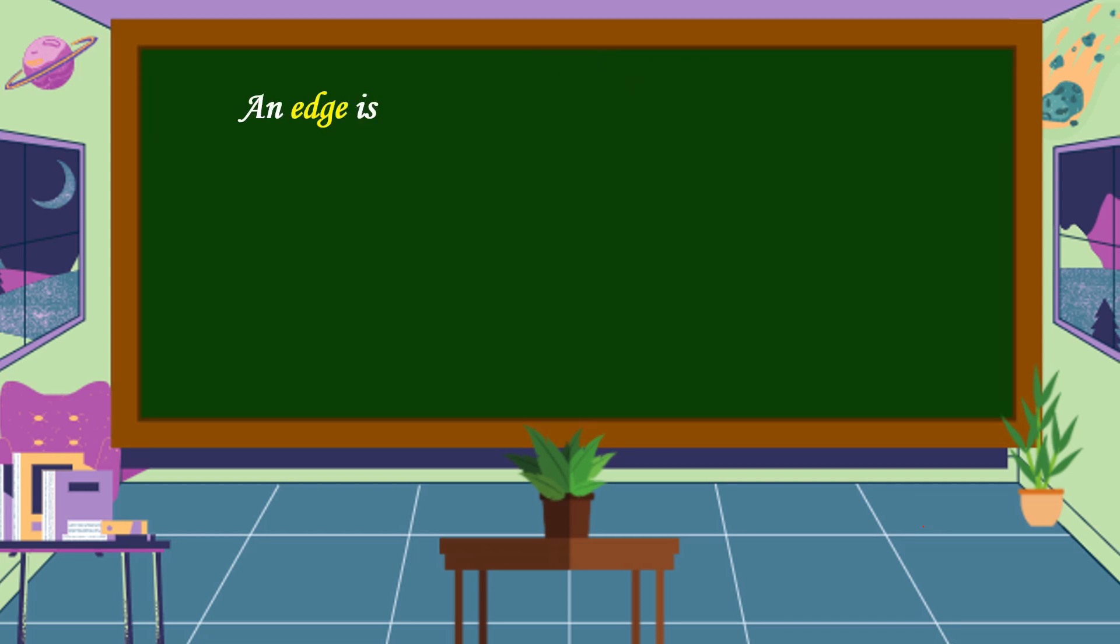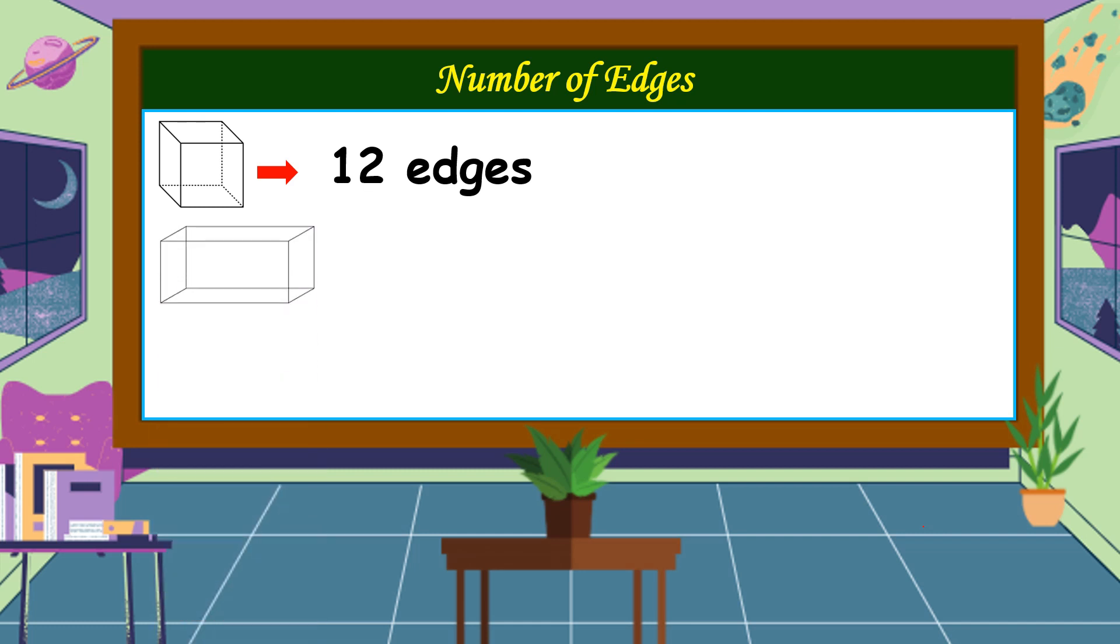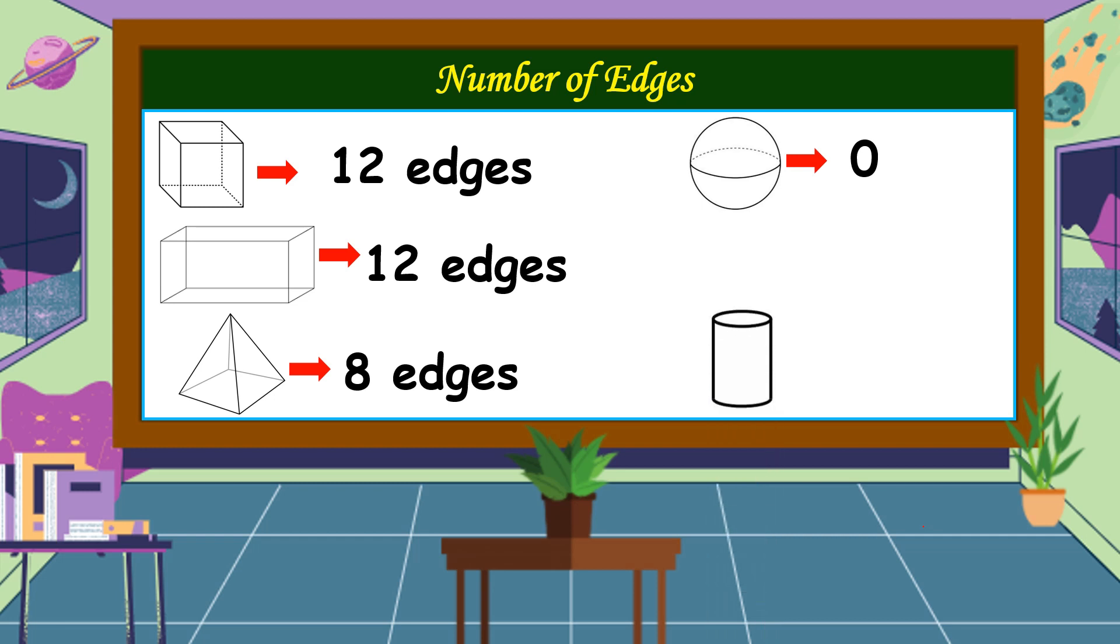An edge is formed when two faces meet. An edge is a straight-line segment. This is the edge. Let's count the edges of each solid figures. A cube has 12 edges. A rectangular prism has 12 edges, too. A pyramid has eight edges. A sphere is zero. A cylinder is zero. And a cone is zero.